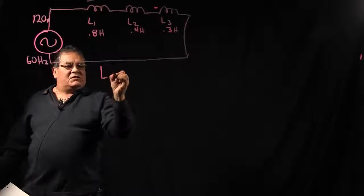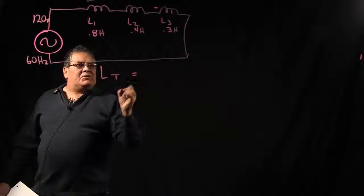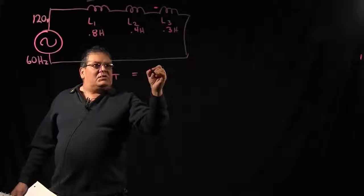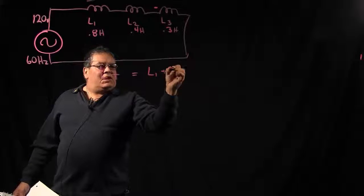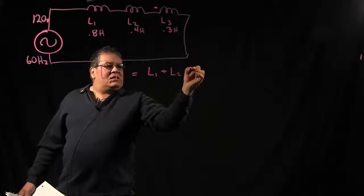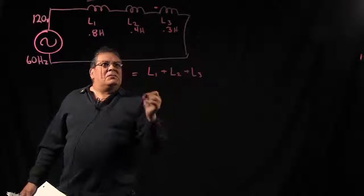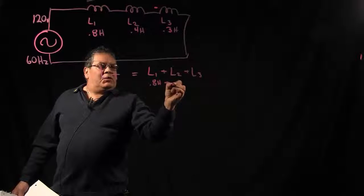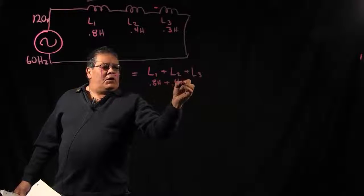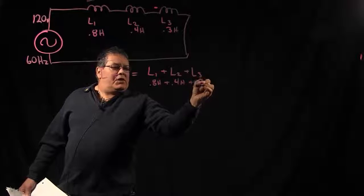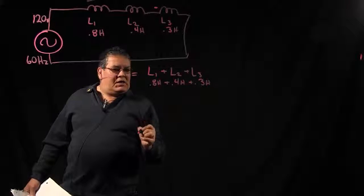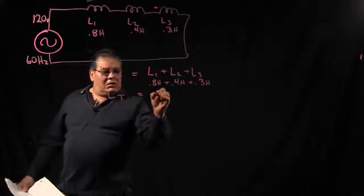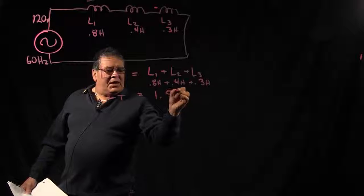For L total, we treat this similar to a resistive type circuit in series. So basically for total inductance we're going to just have L1 plus L2 plus L3. In this situation we have 0.8 henries plus 0.4 henries plus 0.3 henries, and that will give us an L total of 1.5 henries.